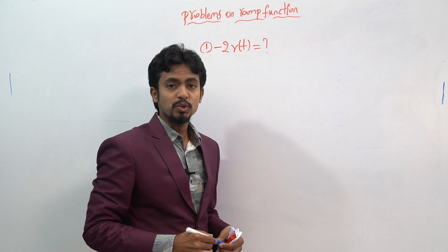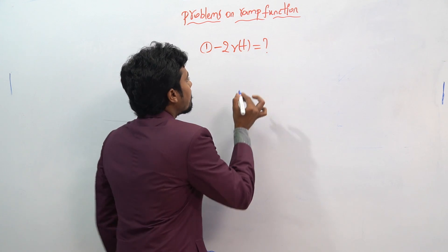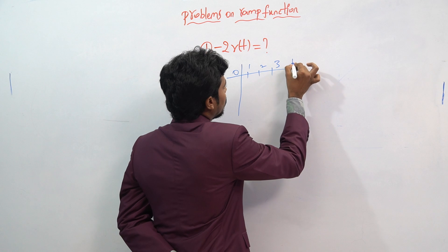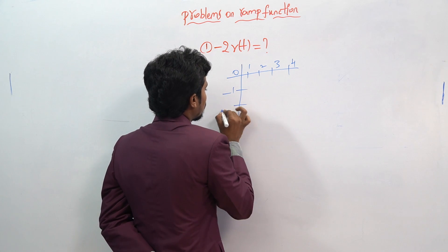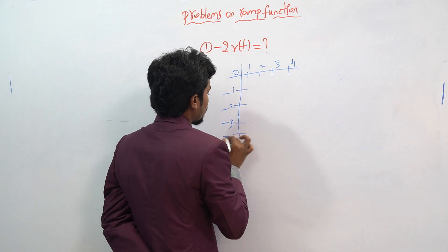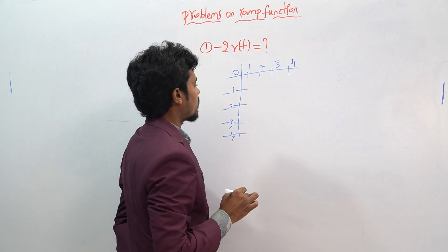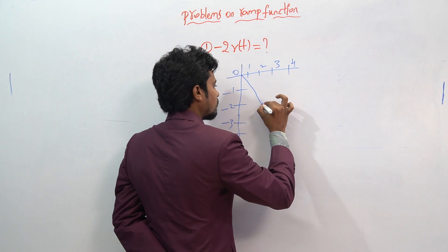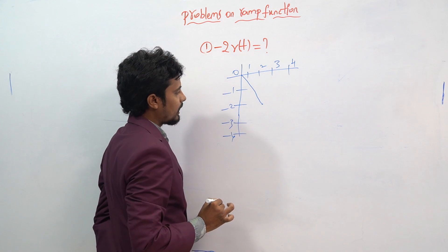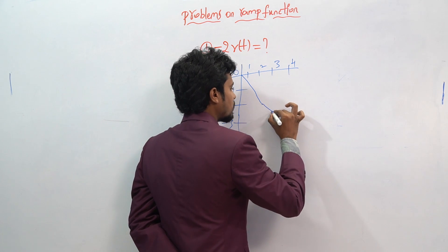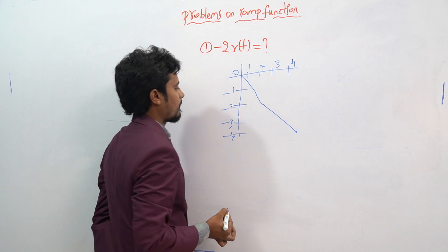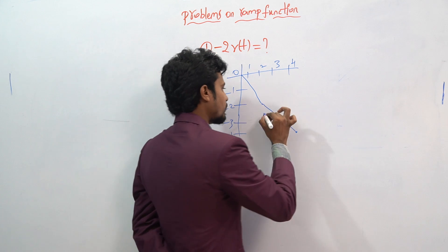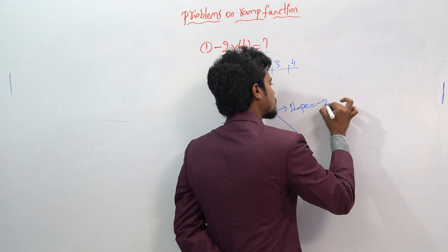Now let us see the minus 2 into r(t) curve. The axis has values 0, 1, 2, 3, 4 and similarly minus 1, minus 2, minus 3, and minus 4. For every minus 2 units we can see a change in the slope. At 1 point, the next 2 points show a change: 0, 2, minus 2, 1 and minus 2, minus 4. Hence the slope will be minus 2.